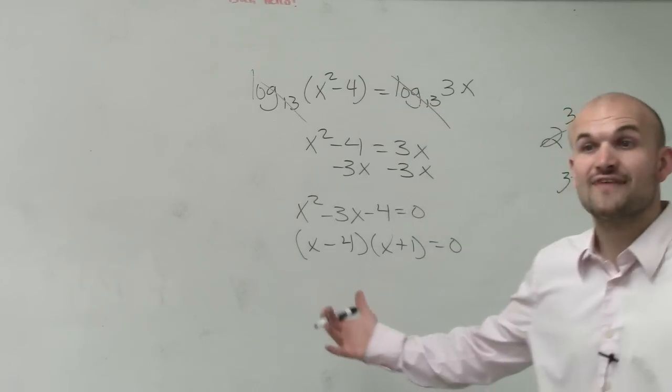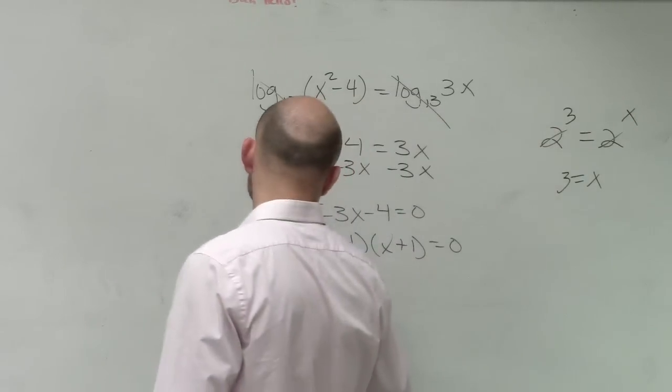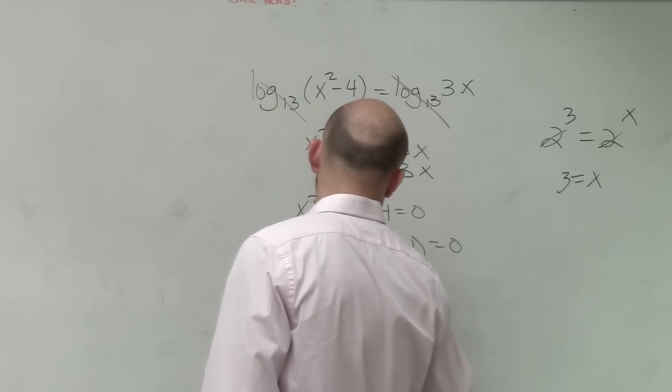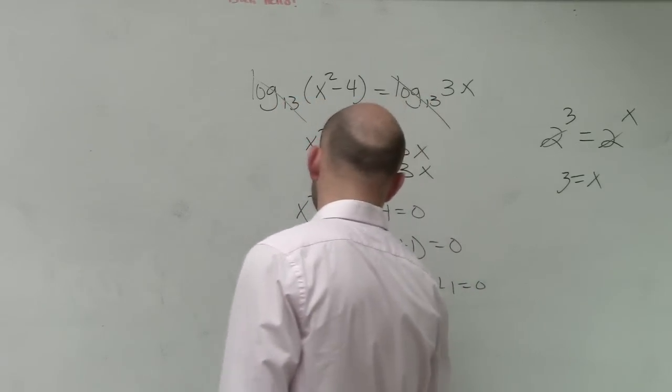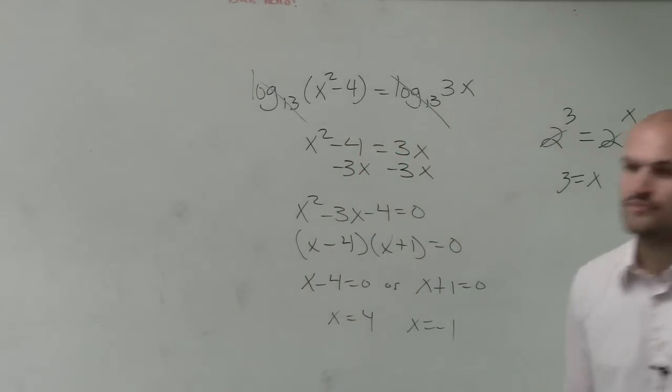And then once you have it factored, now you can apply the zero product property, which says x minus 4 equals 0, or x plus 1 equals 0. Therefore, my two solutions are x equals 4 and x equals negative 1.